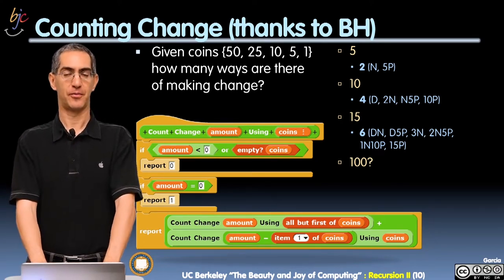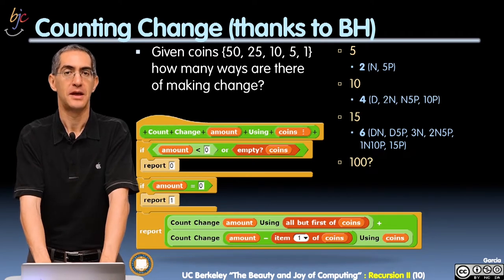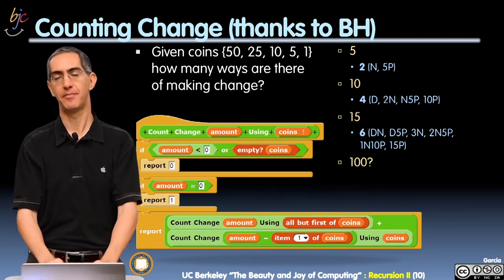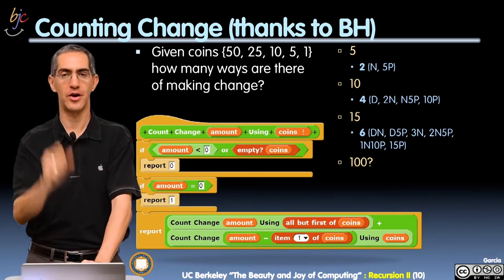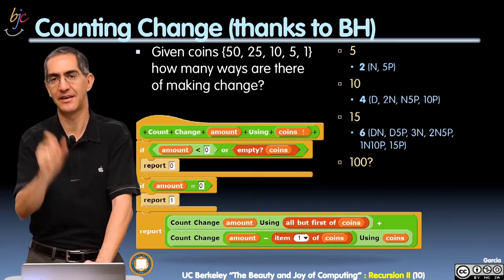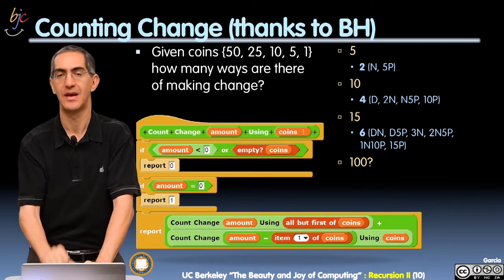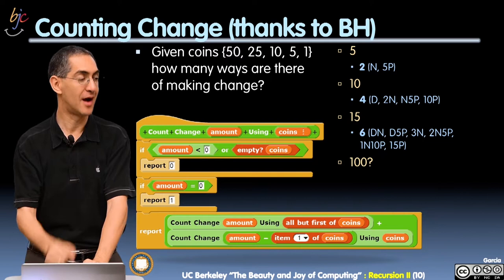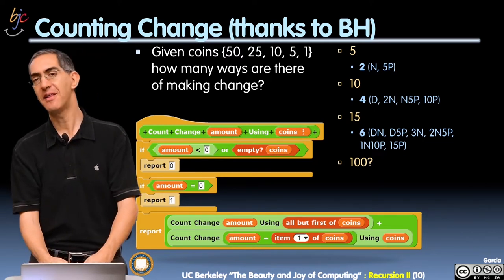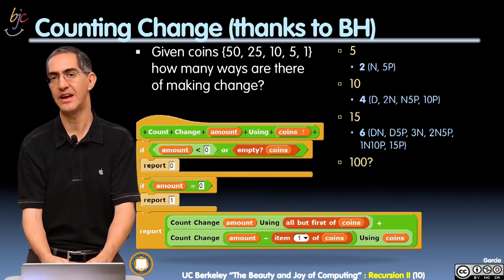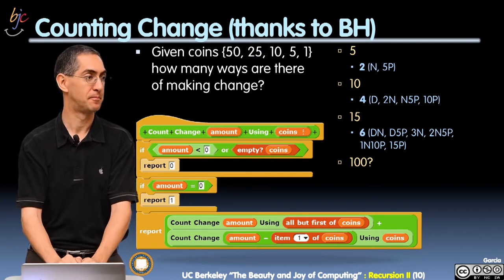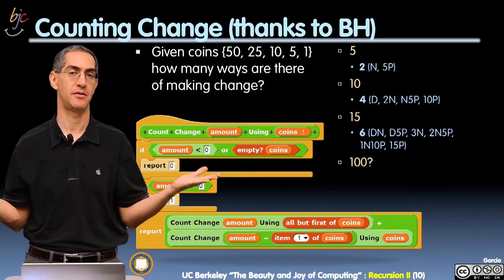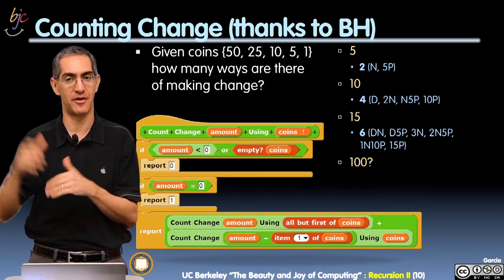Count change. We're doing count change. Count change says: if I give you the set of coins — a 50 cent piece, a quarter (25 cent piece), a dime (10 cent piece), a nickel (5 cent piece), and a penny — how many ways are there of making change for a certain amount? So how many ways are there of making change for five cents? Two ways: a nickel or five pennies. Not too hard. It starts easy, it gets harder very quickly.